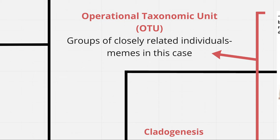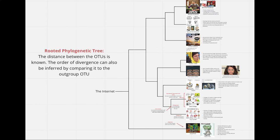In a biological phylogenetic tree, this could be based off differences in DNA sequences. This is a rooted tree, so the distance between the OTUs is known, or made up in this case, and the order of divergence is inferred by comparing it to the outgroup OTU.